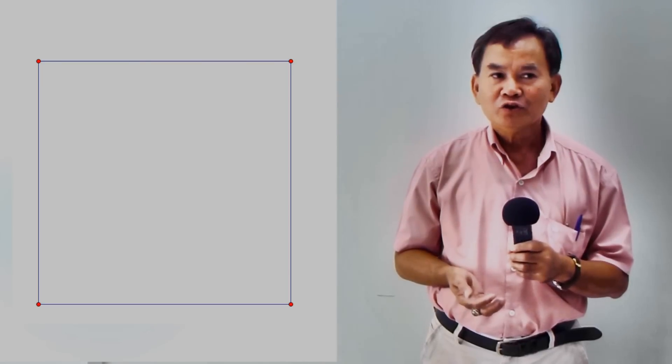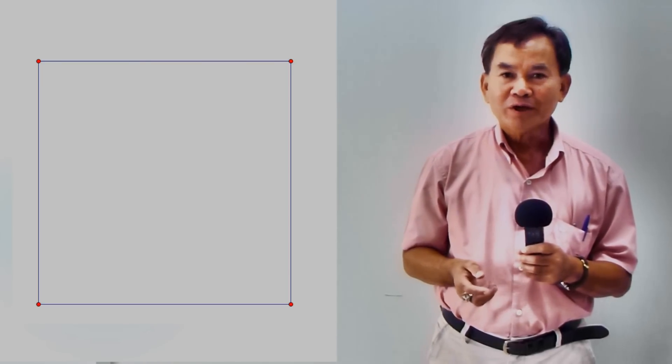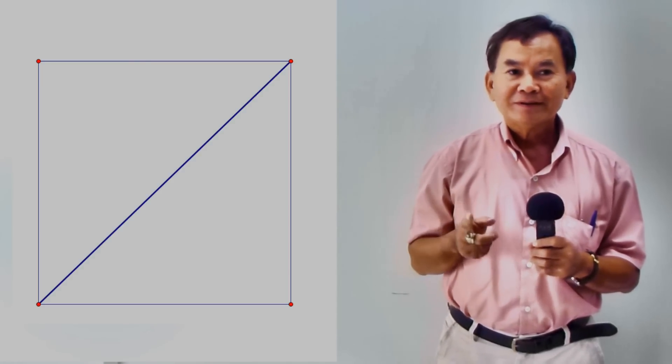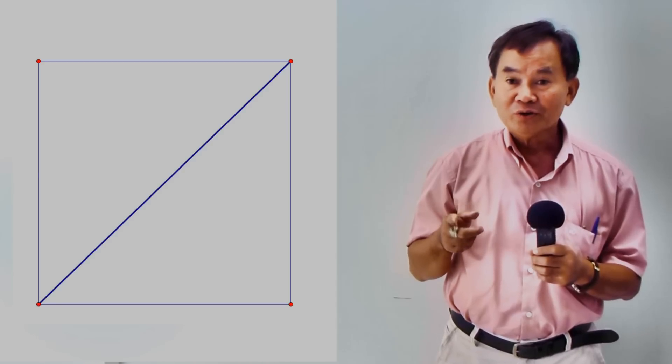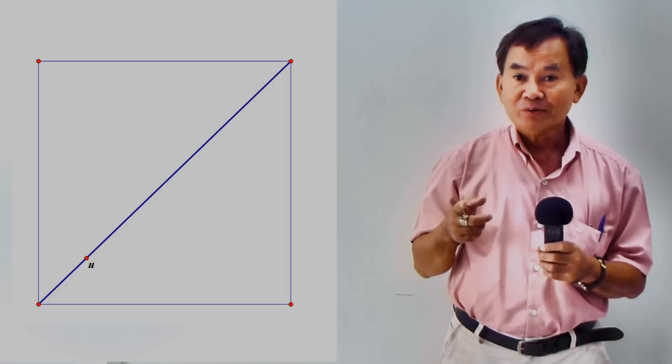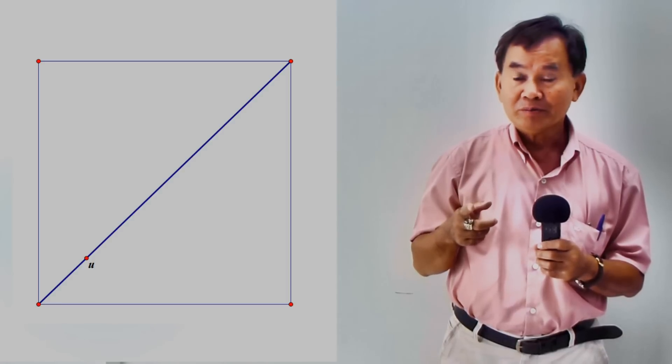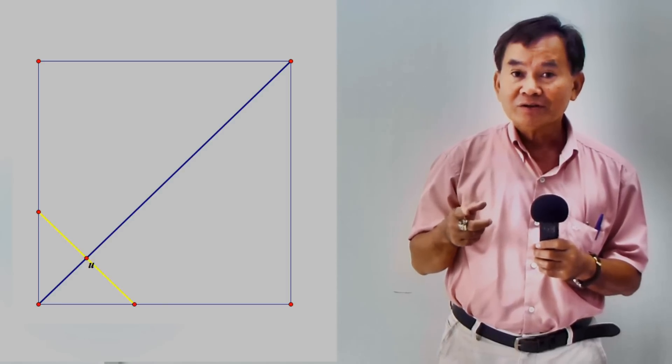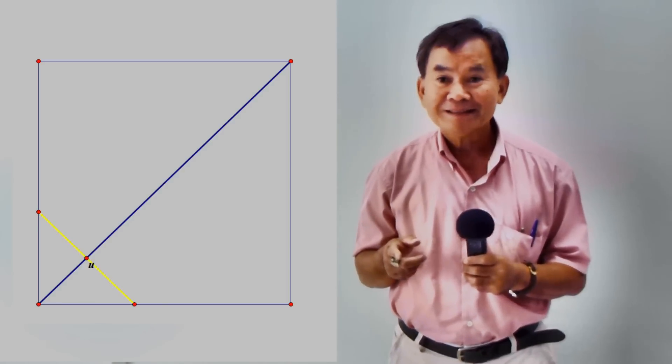We begin with the unit square. Then we draw the main diagonal. On the main diagonal, we choose a point u, a moving point. And from the point u, we draw the perpendicular segment, which is part of a hyperplane.